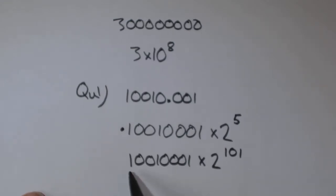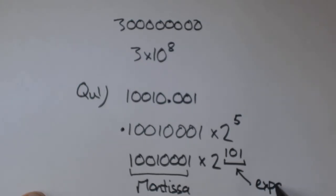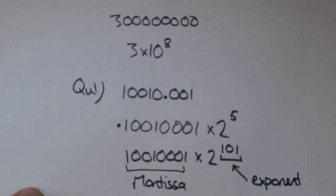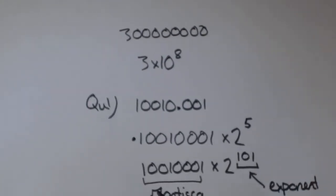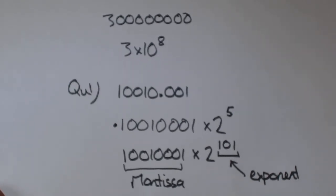So what we've got here is the mantissa, and here we have the exponent. And this is how we save real numbers or numbers with a decimal point.